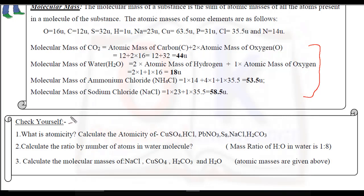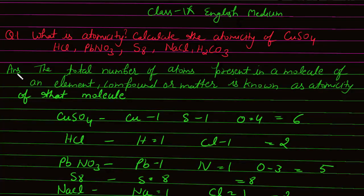There are some questions to check yourself. If the worksheet is well understood, students, solve these quickly. Let's discuss the questions. Question 1: What is atomicity? Calculate the atomicity of copper sulfate, hydrochloric acid, lead nitrate, sulfur, NaCl, and carbonic acid.